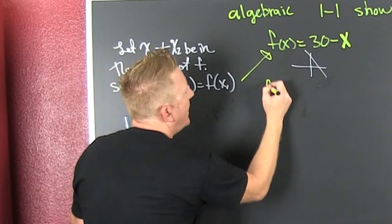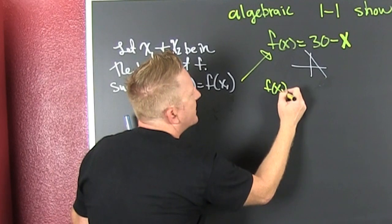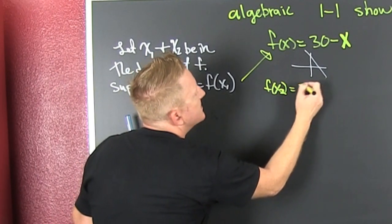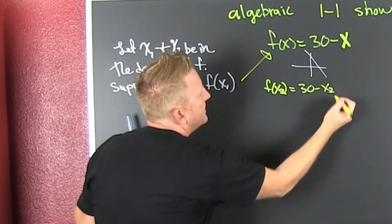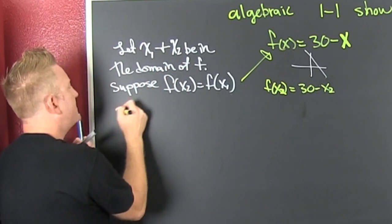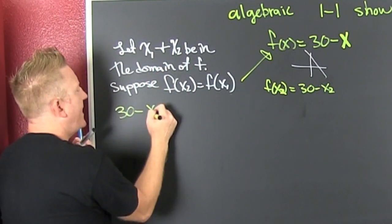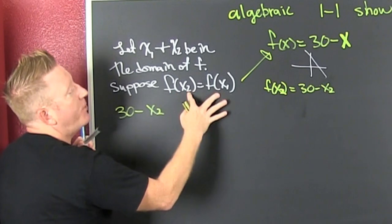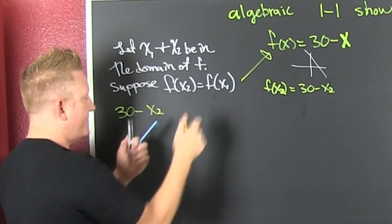So if we're looking for f of x2, then that's 30 minus x2. Yeah, okay, whatever. That's on this side. That's that 30 minus that x2. Why? Because we suppose that these two y values were the same.